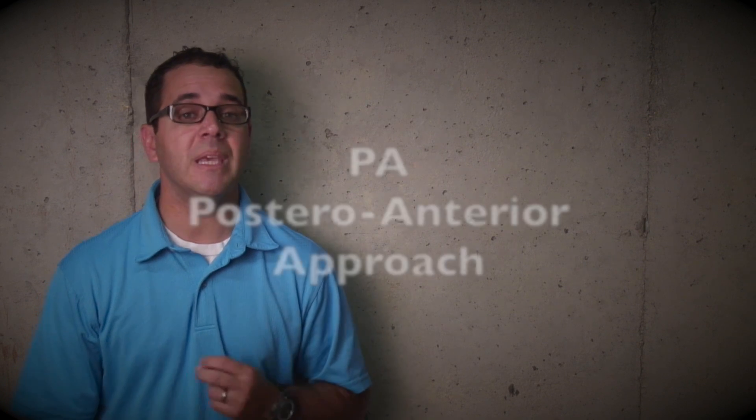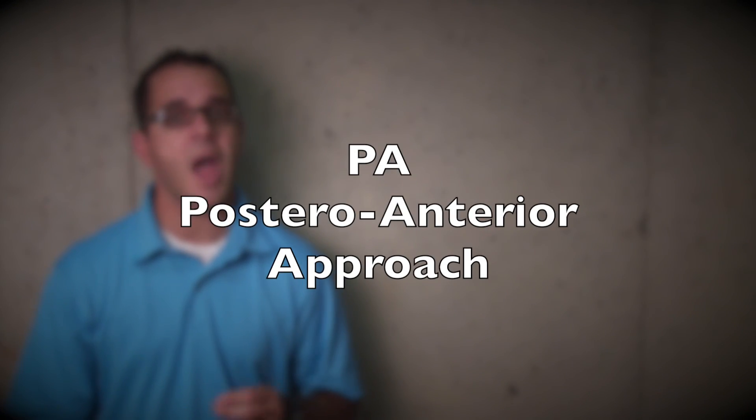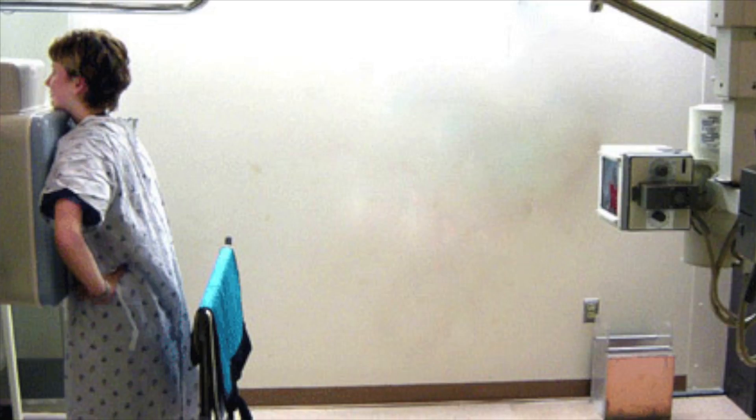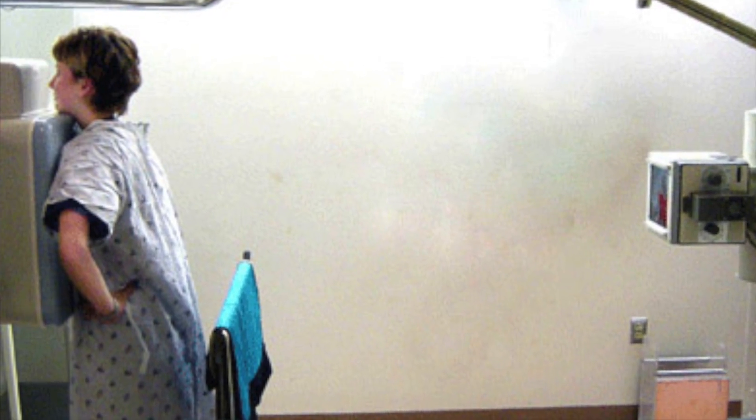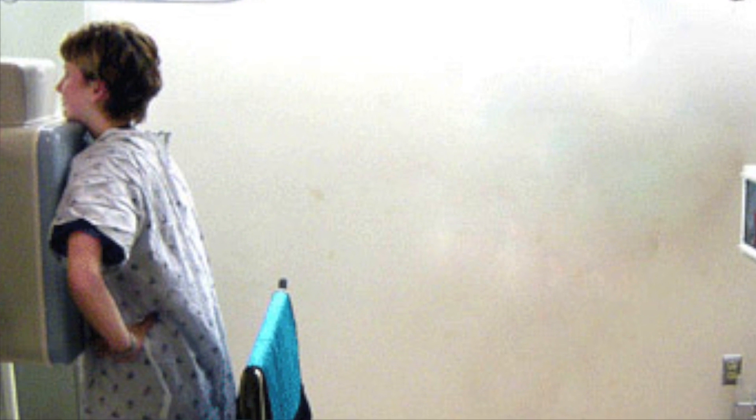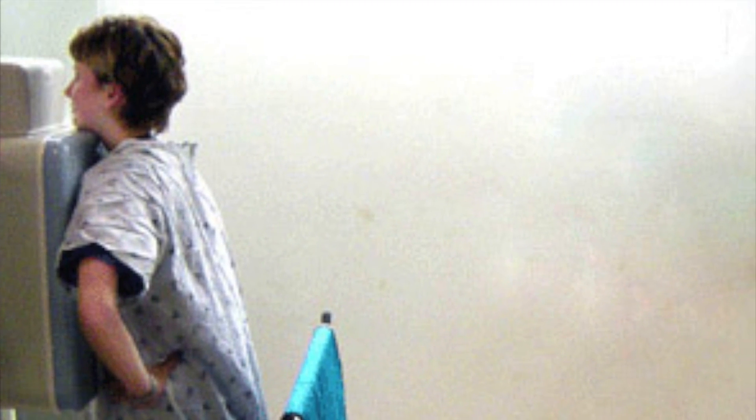Now, the preferred technique for x-rays of the chest is the PA, the posterior anterior view. This is when the x-ray beam enters the patient through the back and goes through the chest into the imaging cassette on the front of the patient's chest. This view results in the least distortion of the aorta and the heart due to the effects of magnification.